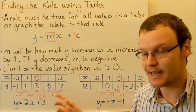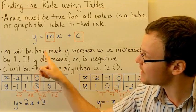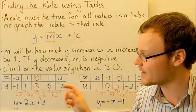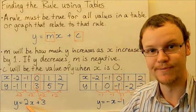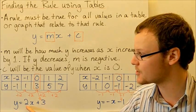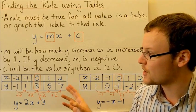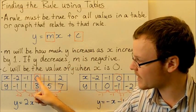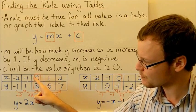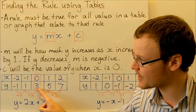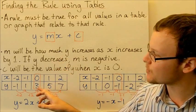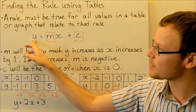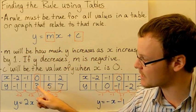So that means m is going to be equal to 2 — it's the coefficient attached to x in our equation. When we're looking for c, that's when x is 0. We can see that x is 0 in the table and y is equal to 3 underneath it, so c is going to be equal to 3.